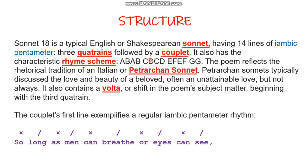Sonnet 18 has three quatrains followed by a couplet. It also has the characteristic rhyme scheme A, B, A, B, C, D, C, D, E, F, E, F, G, G. All these letters represent the last word of each line — we call them end rhymes.